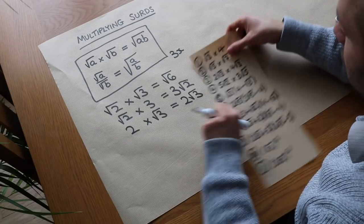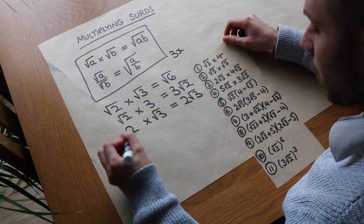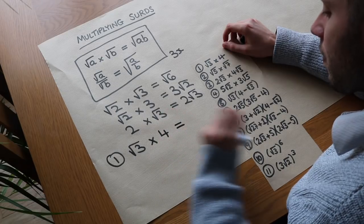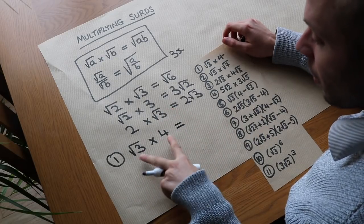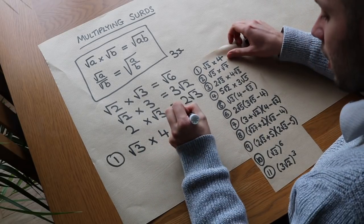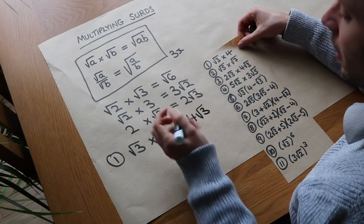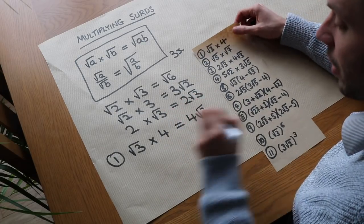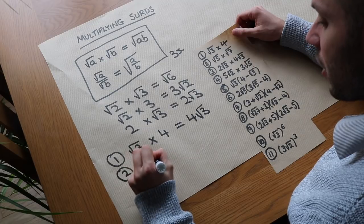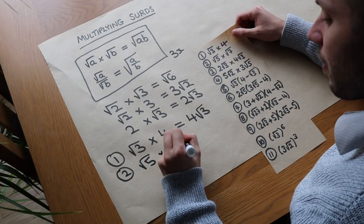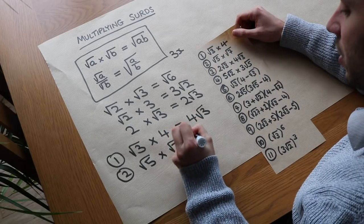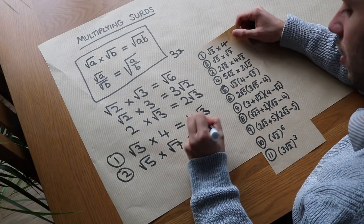Let's use it to solve these particular questions here. We've got question 1: root 3 times 4. Well only one of these is a surd so we put the non-surd first, so it's 4 root 3, meaning 4 times root 3. What about the second one? We've got root 5 times root 7. Now these are both surds so we can do 5 times 7 which is root 35.